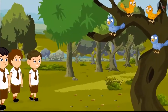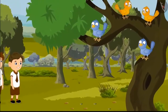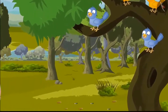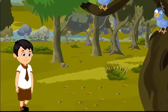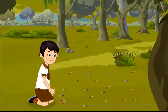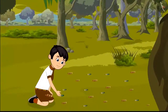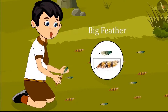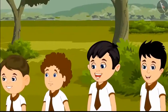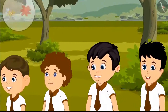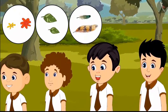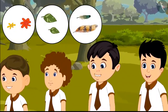While walking, he found a tree on which a lot of birds were sitting. Under that tree were a lot of fallen feathers. Chotu thought to lift two feathers from them. I will take one small feather and one big feather. Oh wow! I got flowers, leaves and bird feathers. Now I will go home and stick them in my notebook.